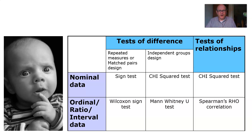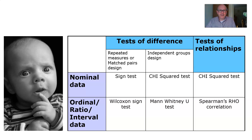As you can see, we've got our three D's: is it a test of difference or relationship? We've got our designs — repeated measures design and matched pairs design, which is related data, or independent groups design, which is non-related data. Down the side we have our levels of measurement: nominal, and then categorised together is ordinal, ratio, and interval. You can just say 'at least ordinal' — if you're not sure if it's ordinal, ratio, or interval, you can say 'at least ordinal' and get credit. The tests are: a sign test, the chi-squared test, the Wilcoxon signed-rank test, the Mann-Whitney test, and Spearman's Rho. These are shortened names and that's fine — you'll still get credited for those in the exam.